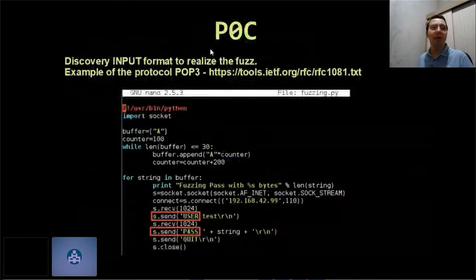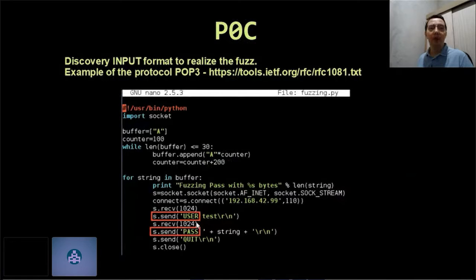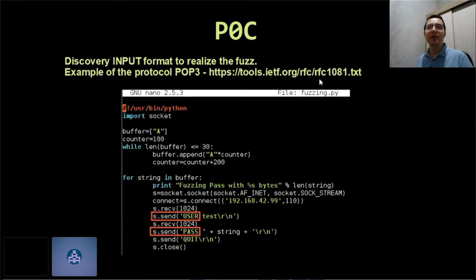Now we have a POC. Discover input forms to fuzz first. Example of the protocol POP3. Here we have the command USER and command PASS. Each protocol has its own commands. In this case, protocol POP3 has a specification in document RFC 1081. Each protocol has its own document with its own specification.